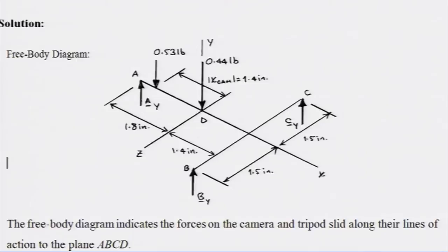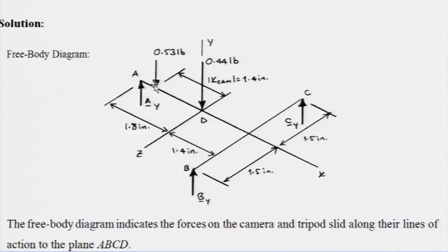Let us go through the solution quickly. For part B, the solution is now shown in the video. This is the free body diagram for part A, which many of you have already solved. It is a parallel force system: the tripod weight passes through D, and if you calculate the camera weight, it acts at 1.4 inches from the Z-axis passing through D.